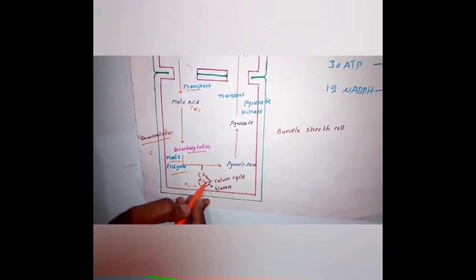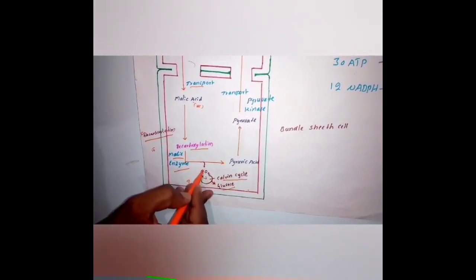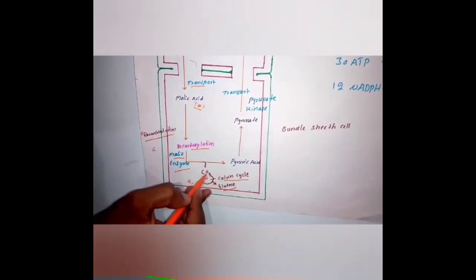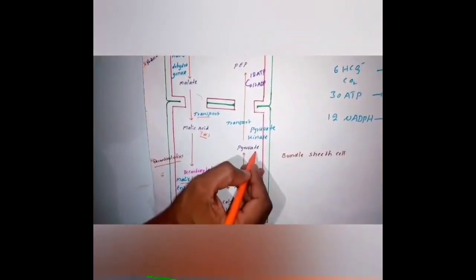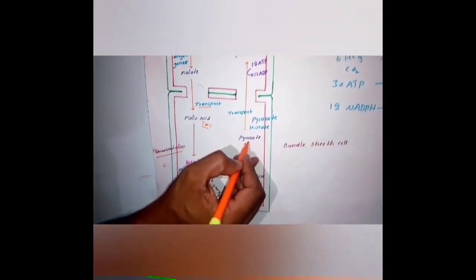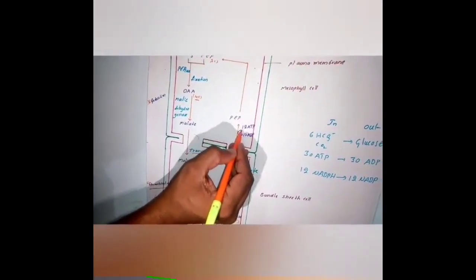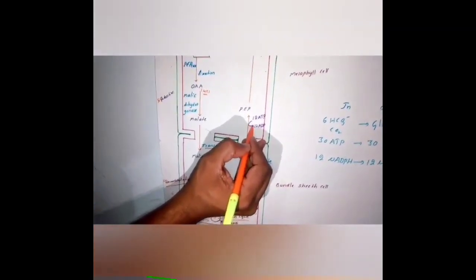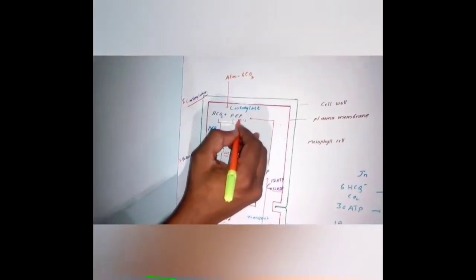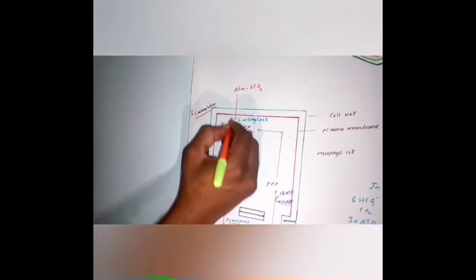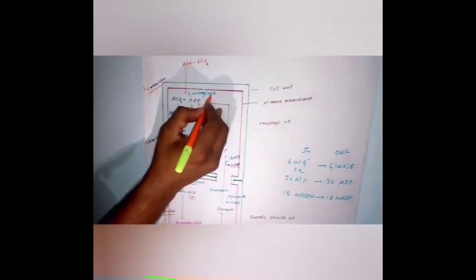This carbon dioxide in the bundle sheath cells undergoes the Calvin cycle — carboxylation, reduction, and regeneration — and at the end of this Calvin cycle, glucose is formed. The remaining three-carbon compound from the malic acid is pyruvic acid. Pyruvic acid is converted into pyruvate, which is transported back to the mesophyll cells. By consumption of 12 ATP — 12 ATP released into 12 ADP — phosphoenolpyruvic acid is regenerated, ready to combine with more carbon dioxide.